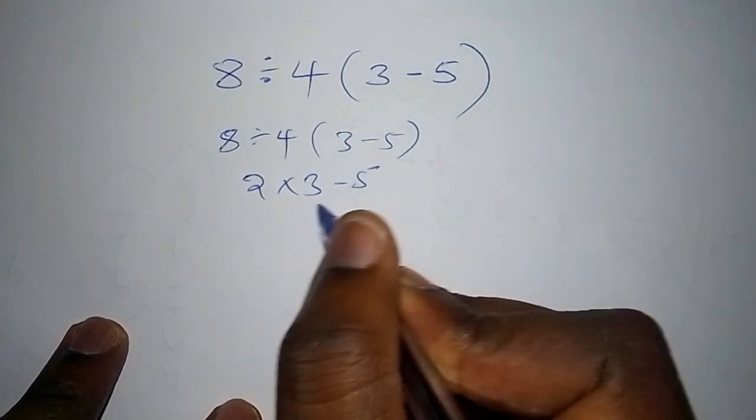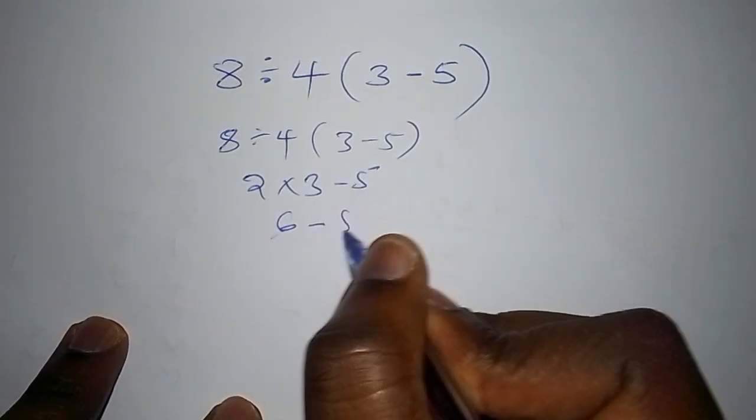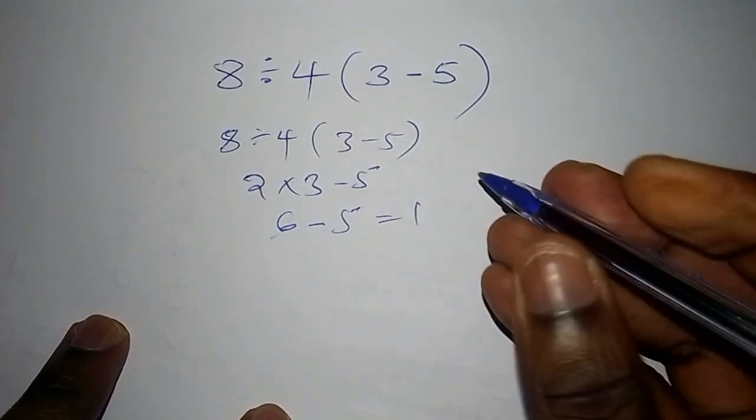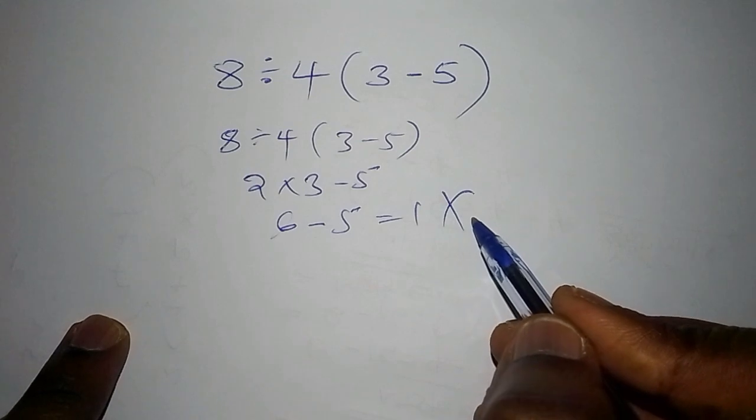Then you shall arrive at 6 subtract from 5, and your answer is 1. When you work it out like this, you shall end up with the wrong answer, so don't try this method.